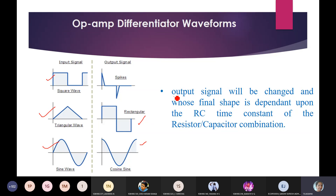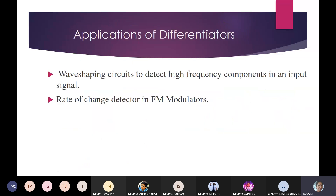The shape of the output signal also depends on the RC time constant. The differentiator is used mainly in wave-shaping circuits — to detect high-frequency components in an input signal, in FM demodulators, and as a rate-of-change detector.